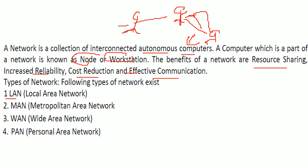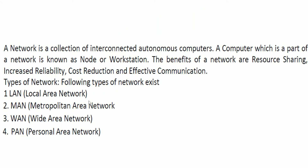There are different types of networks: Local Area Network, Metropolitan Area Network, Wide Area Network, and Personal Area Network. The type of network depends on the number of nodes and the distance involved — networks are named and categorized based on those two factors.